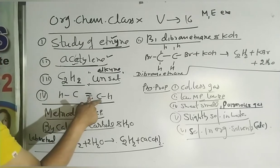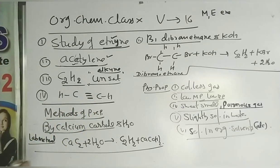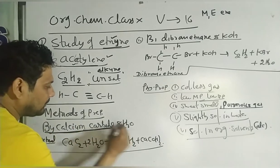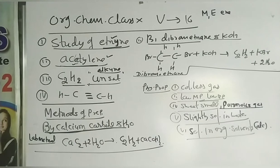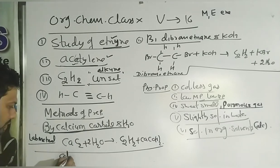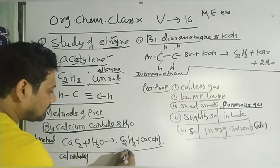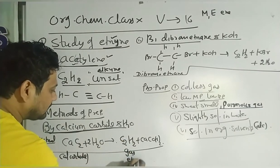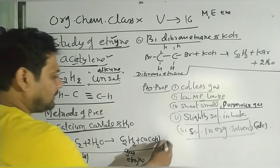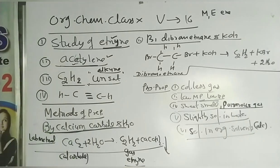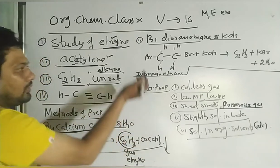This is the methods of preparation of ethyne. Method one: calcium carbide and water. When calcium carbide reacts with water, the gas produced is ethyne gas, also called acetylene. Calcium hydroxide is formed as a precipitate. When calcium carbide is heated with water, ethyne gas is formed along with calcium hydroxide.